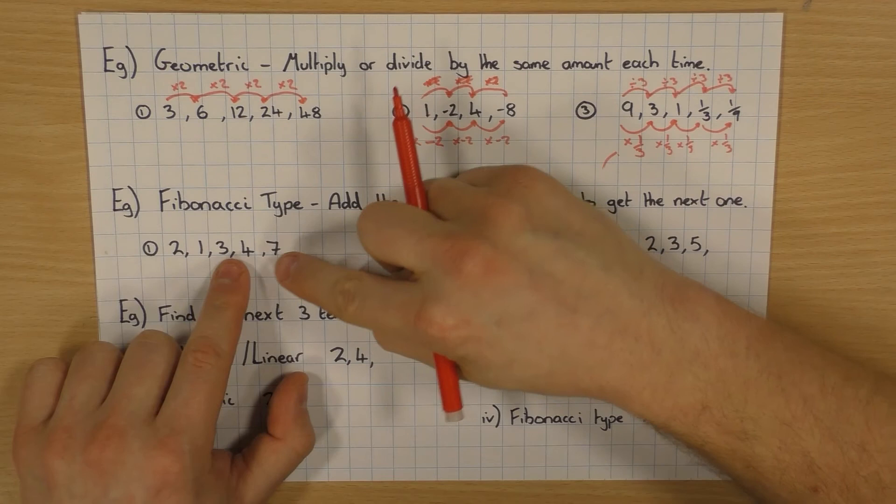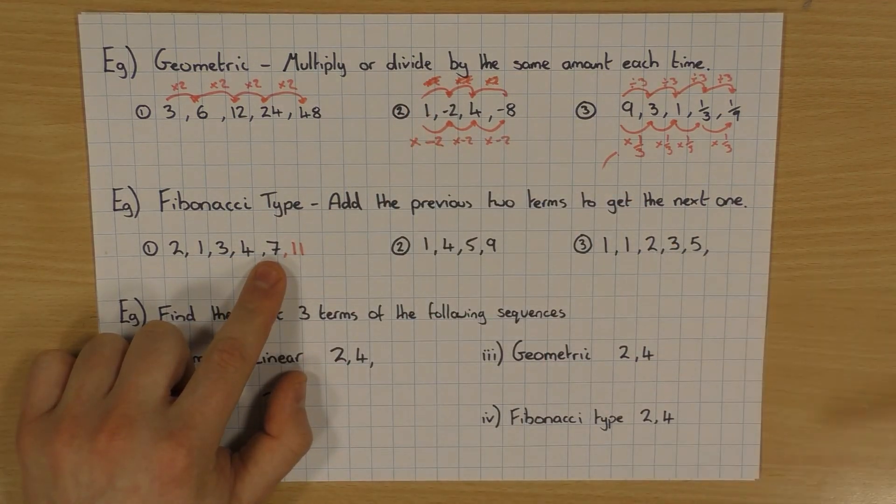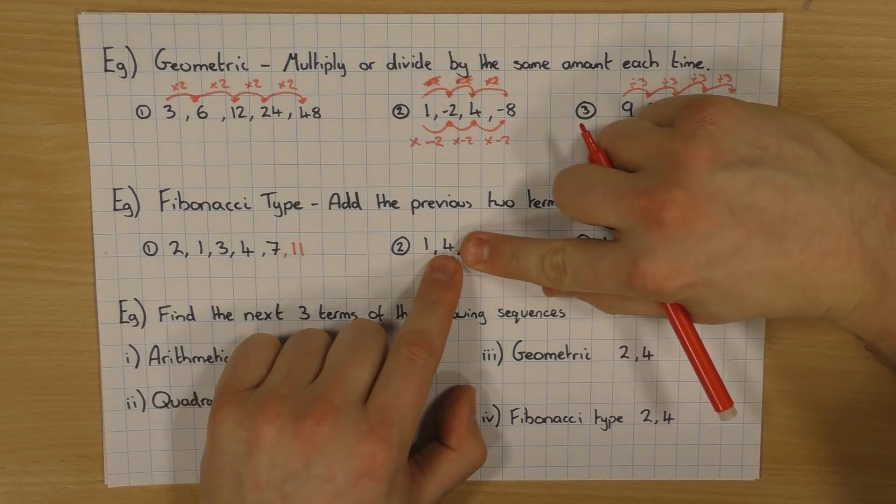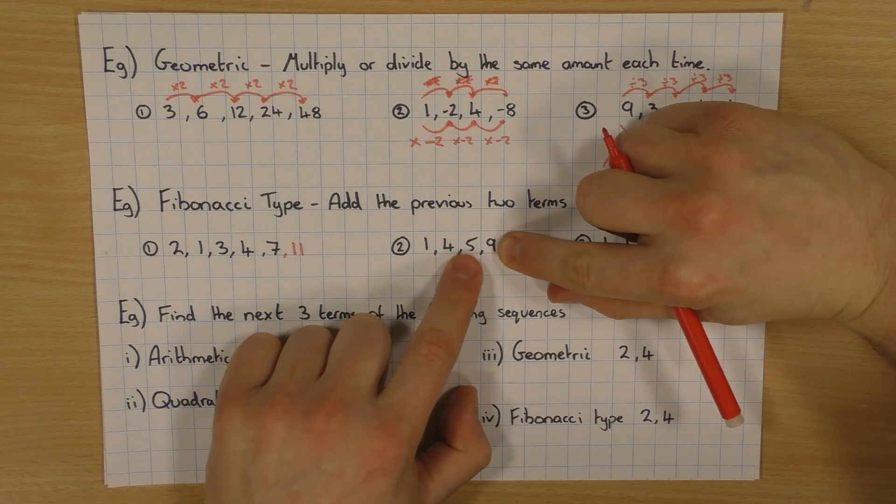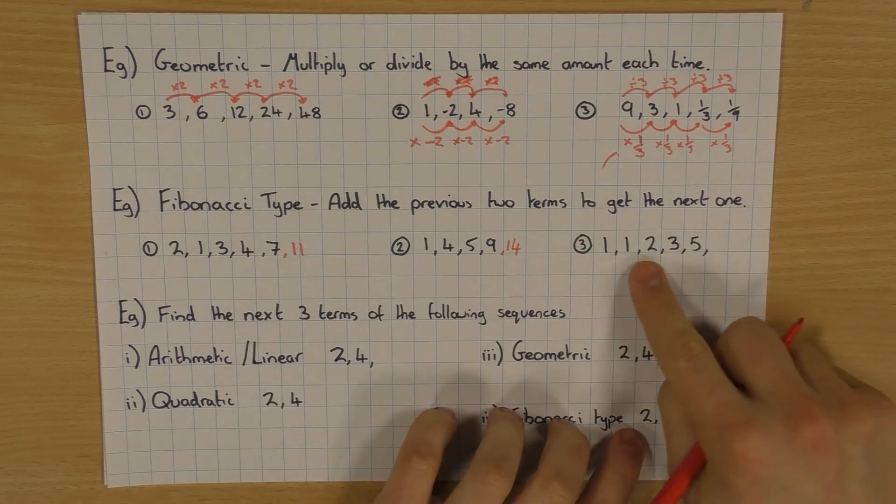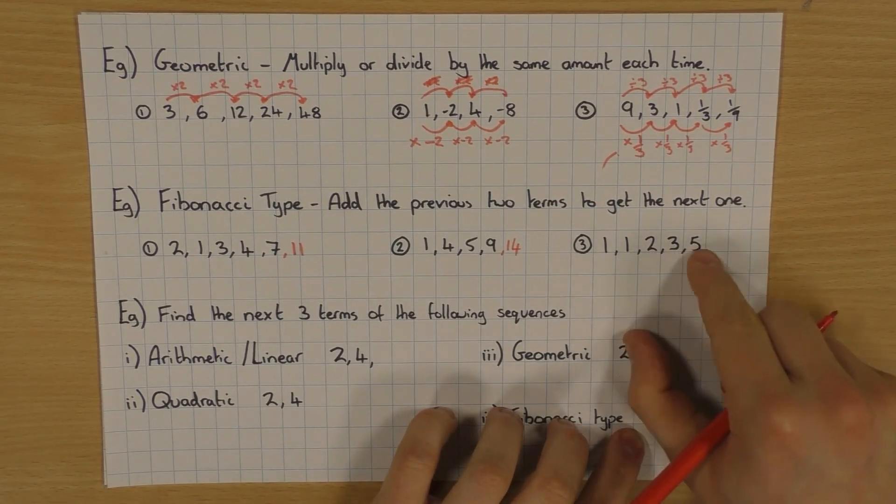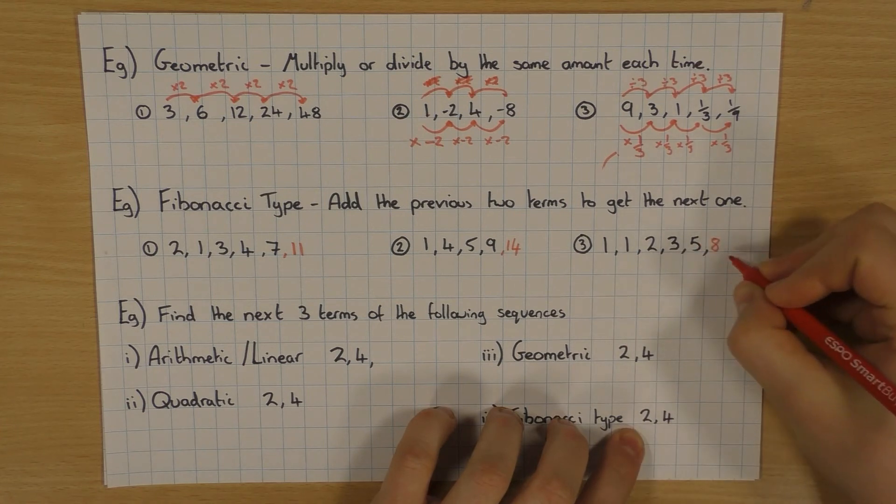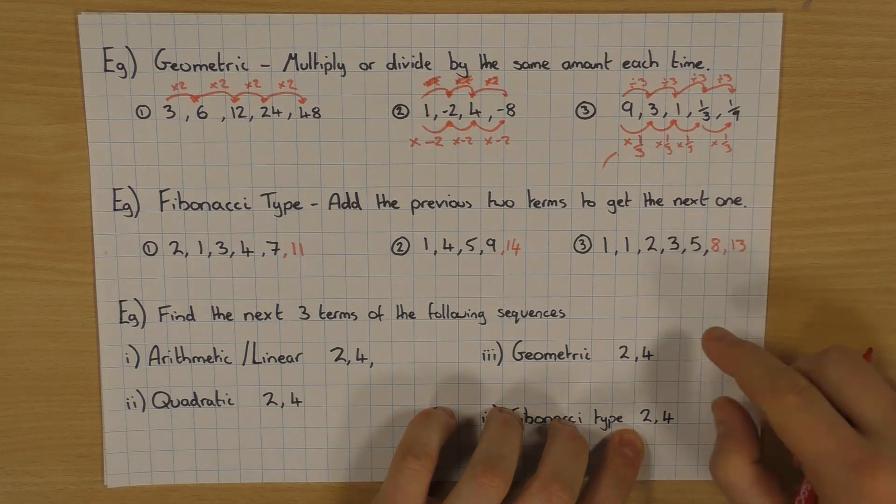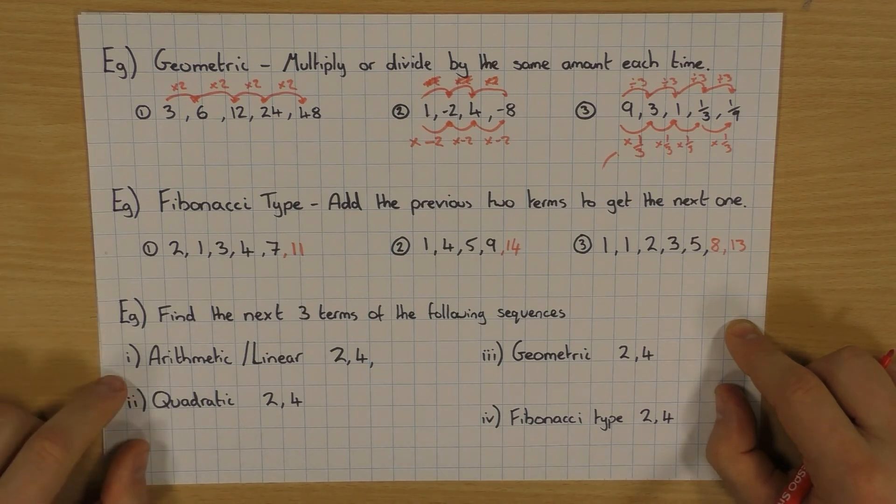So for example, if I was to add another one there, I'll do 4 add 7, which of course would be 11 and so on. Next one is exactly the same thing. 1 add 4 is 5. 4 add 5 is 9. If I was to do the next one, 5 add 9, it would be 14. And as I said, this was the original. So 1 add 1 is 2. 1 add 2 is 3. 2 add 3 is 5. And if I was to carry on, 3 add 5 is 8. And then obviously 5 add 8 is 13 and so on and so forth. So that's a Fibonacci type sequence when you add the previous two to get the next term.